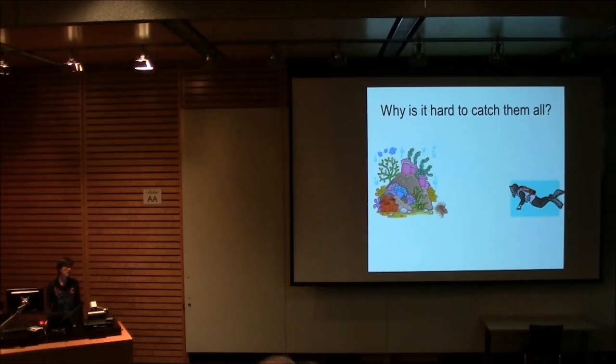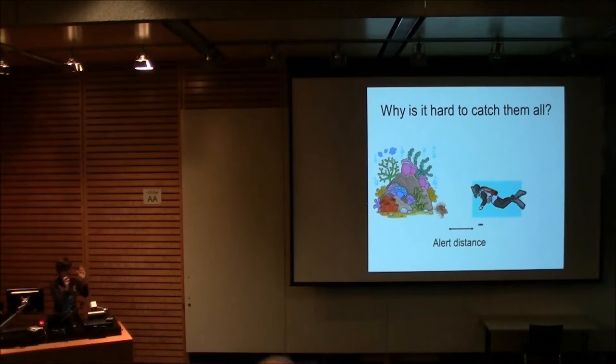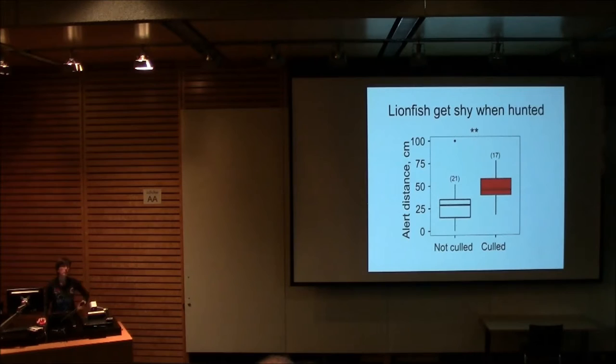So, we did another little study to try to understand why it's so difficult to remove those last few lionfish. So, we tried to understand vigilance in lionfish. So, we had divers approach a lionfish like this and as soon as the lionfish showed evidence of vigilance, and with lionfish, it's not sort of swimming quickly into the coral. With lionfish, it's actually turning towards the diver and sort of spreading their venomous dorsal fins. It's a very kind of antagonistic posture. It's not a being kind of fish. As soon as the diver saw this behavior, the diver dropped a little weight and then another diver measured the distance between the lionfish and the position of the diver.